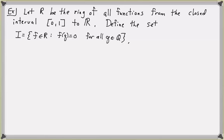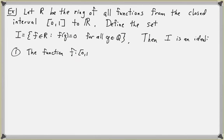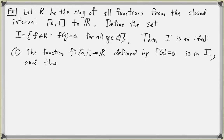We will show that I is an ideal. First, I is non-empty: the function f : [0,1] → ℝ defined by f(x) = 0 is in the set I, since it maps every rational number to 0. Thus I is not empty.